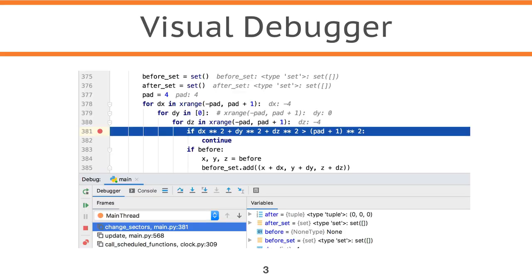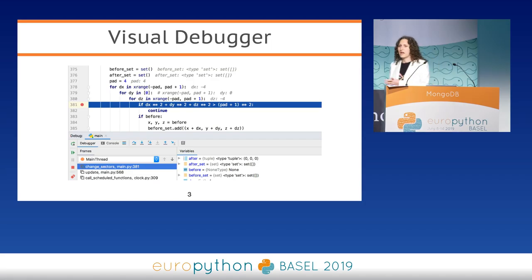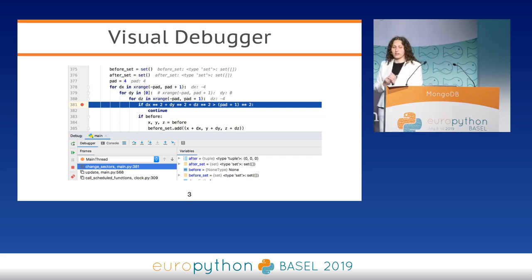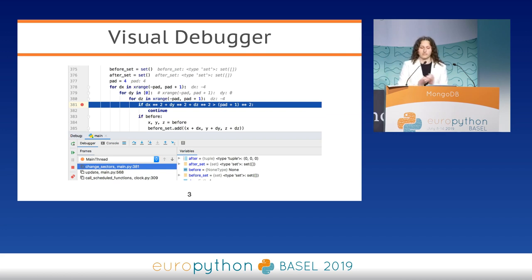We always write code with bugs, but a productive developer is not a developer who writes code without bugs, but a developer who can quickly find and fix them. And Visual Debugger is a tool which can help you to do it really efficiently.